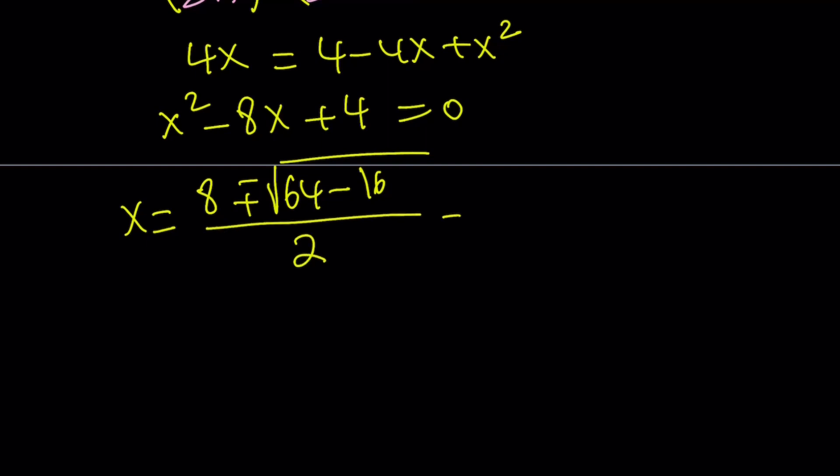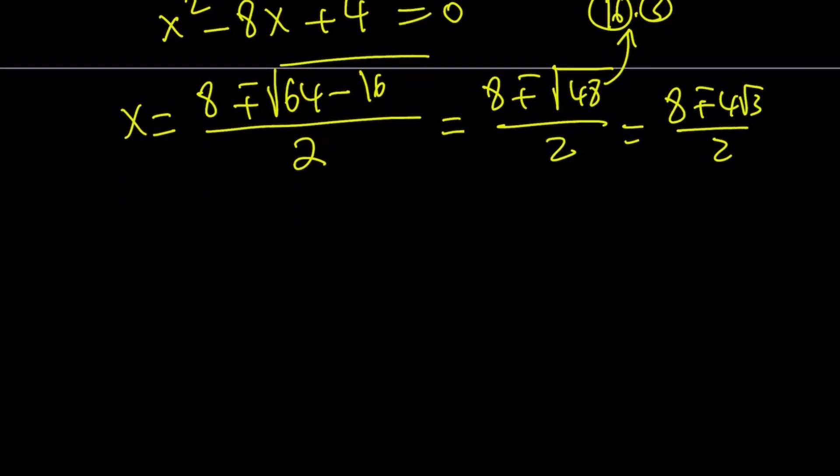64 minus 16 is 48, so let's go ahead and write it as square root of 48. And since 48 can be written as 16 times 3, when you take the square roots, it's just going to be 4 root 3. And now we can divide everything in the numerator by 2, so x gives us 4 plus minus 2 root 3. So those are the two solutions.